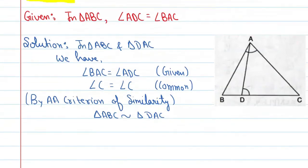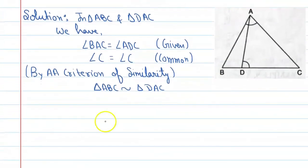If these two triangles are similar, then their corresponding sides' ratio will also be proportional. That is AB upon DA is equal to BC upon AC is equal to AC upon DC.